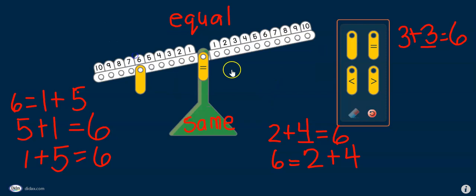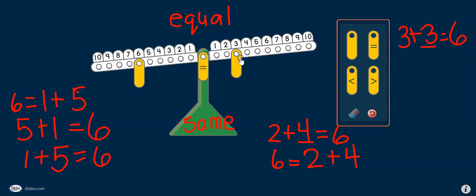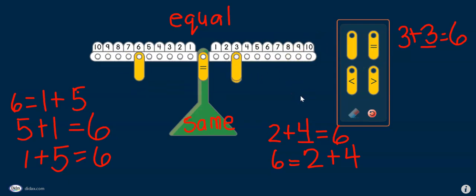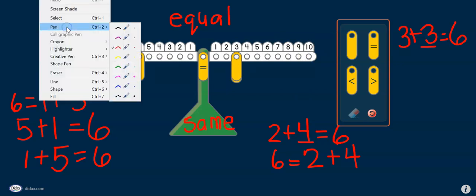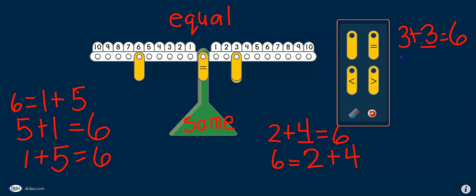What if I have 6 on this side of the balance scale? Will it be the same? Yes, it is. 6, so I can also write the equation as 6 is equal to 3 plus 3. So, I could see it both ways.